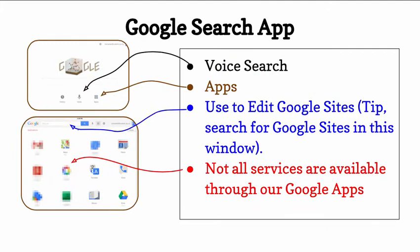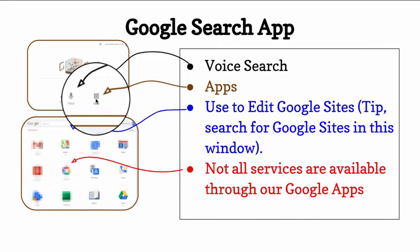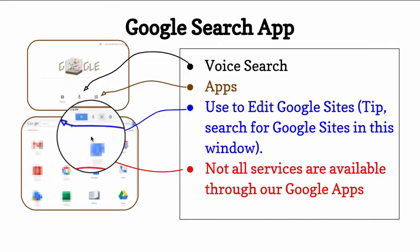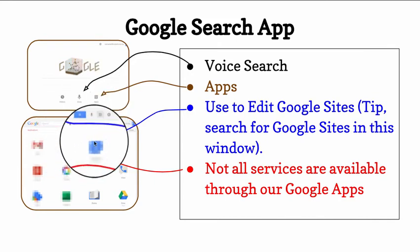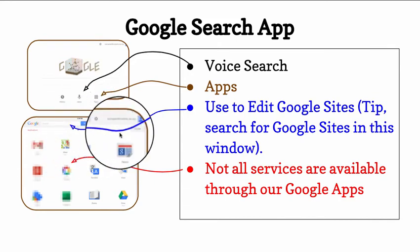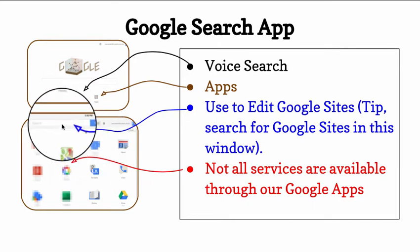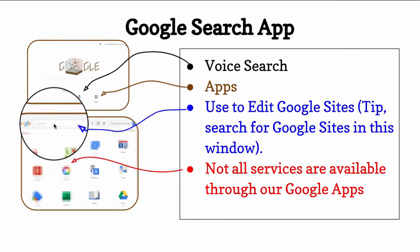Google Search app — you can do voice search. You can click to get apps. Once you're in apps, you can use it to edit Google Sites. Tip: in the search window, simply search for 'sites,' and that will allow you to edit your portfolio.